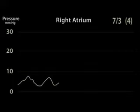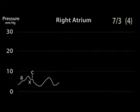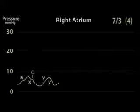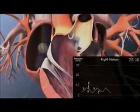The right atrial waveform has several identifiable components: an A wave, which indicates atrial contraction; an X descent, which indicates atrial relaxation and contains a small C wave indicating closure of the tricuspid valve; a V wave, which indicates passive atrial filling; and a Y descent, which indicates opening of the tricuspid valve and passive atrial emptying. Instruct your assistant to write down the mean right atrial pressure.